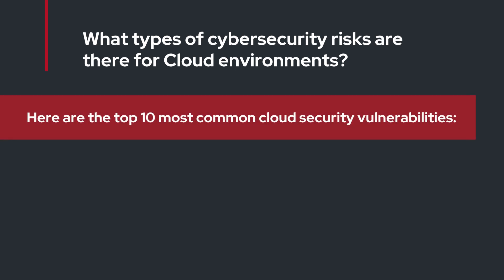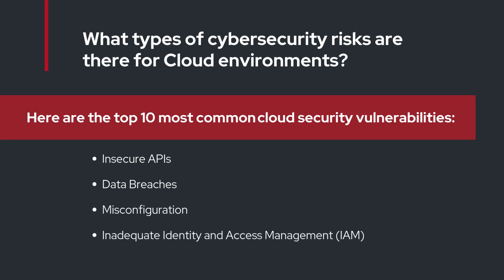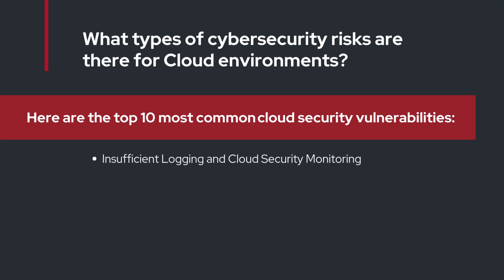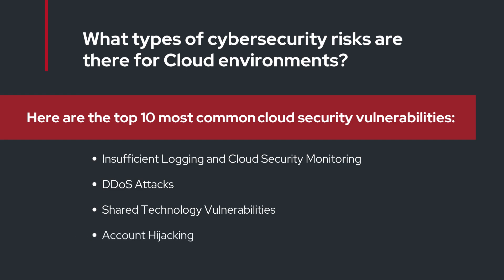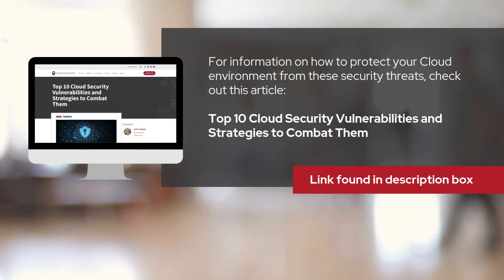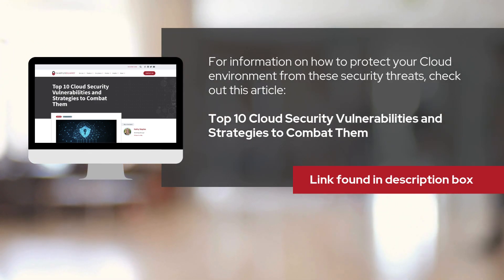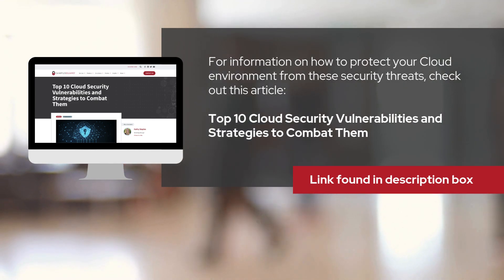What types of cybersecurity risks are there for cloud environments? Here are the top 10 most common cloud security vulnerabilities: Insecure APIs, Data Breaches, Misconfiguration, Inadequate Identity and Access Management, Insufficient Logging and Cloud Security Monitoring, DDoS Attacks, Shared Technology Vulnerabilities, Account Hijacking, Data Loss, and Lack of Cloud Security Governance. For information on how to protect your cloud environment from these threats, check out the article "Top 10 Cloud Security Vulnerabilities and Strategies to Combat Them" — link found in the description box.